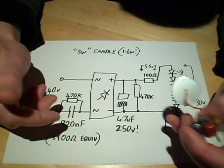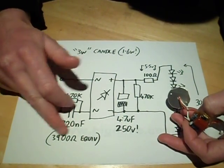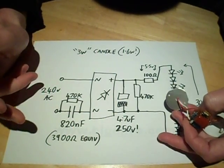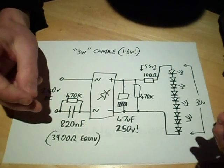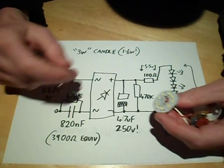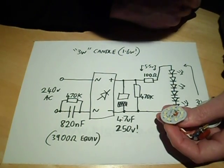So based on the formula for capacitive reactance, which gives you an equivalent for this capacitor of 3900 ohms at 50 hertz, based on that, I calculated that this lamp is going to be 1.6 watts, which is about half its stated rating.